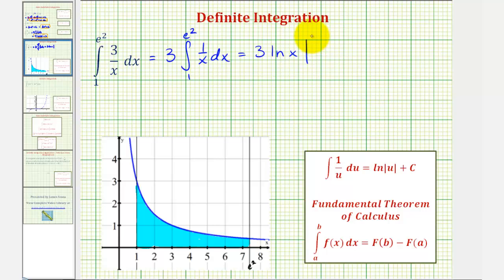Now we'll evaluate this at the upper and lower limits of integration, and then find the difference. So we'll first substitute e squared for x, giving us three natural log e squared minus three natural log one.